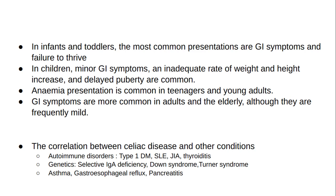Celiac disease has correlations with other conditions, including autoimmune disorders such as type 1 diabetes mellitus, SLE, JIA, and thyroiditis; genetic conditions such as selective IgA deficiency, Down syndrome, and Turner syndrome; as well as asthma, gastroesophageal reflux, and pancreatitis.